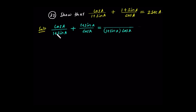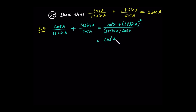You can see: 1 plus sin(a) cancels with 1 plus sin(a). We have cos(a) times cos(a), which is cos squared(a). Plus, (1 + sin(a)) times (1 + sin(a)), which is (1 + sin(a)) squared. This is cos squared(a) plus the square of the first number plus twice the product of the two.